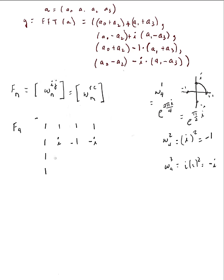Row two, column one: exponent 2×1 = 2, so omega_4^2 = -1. Row two, column two: exponent 4, which mod 4 = 0, so that's 1. Row two, column three: exponent 6, which gives -1. Row three, column one: exponent 3, giving -i. Row three, column two: exponent 6, giving -1. Row three, column three: exponent 9, mod 4 = 1, giving i.